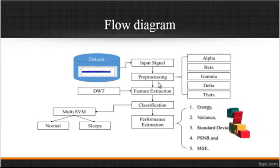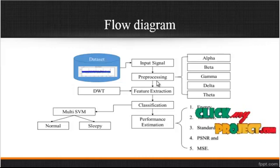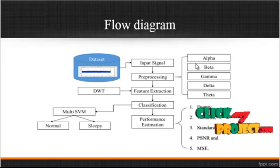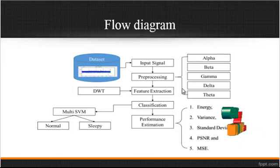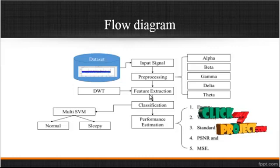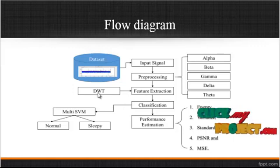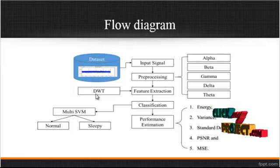In the preprocessing step, we convert the single signal into alpha, beta, gamma, delta, and theta signals. After converting these five signals, feature extraction is carried out. Feature extraction is extracting some data values from the signal. For extracting the features, we use DWT, the discrete wavelet transform.